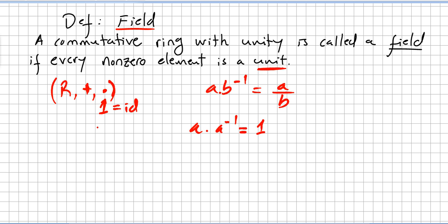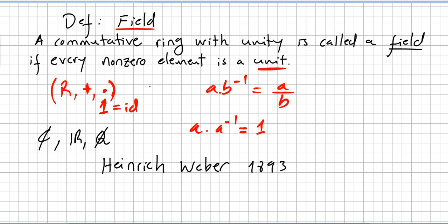We have lots of fields: the complex numbers, the real numbers, the rational numbers — all these are fields. All this abstract theory on fields was initiated by Heinrich Weber in 1893.